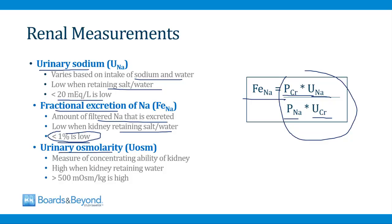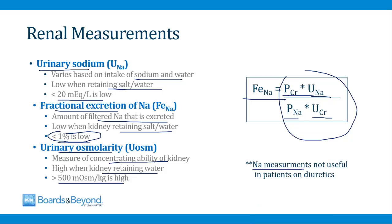The urinary osmolarity measures the concentrating ability of the kidneys — their ability to reabsorb water. It should be high when the kidneys are retaining water, as happens in pre-renal failure. Urinary osmolarity can range from as low as 50 to as high as 1,200, but in pre-renal failure the value is usually greater than 500. One super high-yield point: sodium measurements in the urine are not useful in patients on diuretics, especially loop diuretics. In those patients, the urinary sodium and FENa will be high due to the diuretics, not the degree of renal failure.